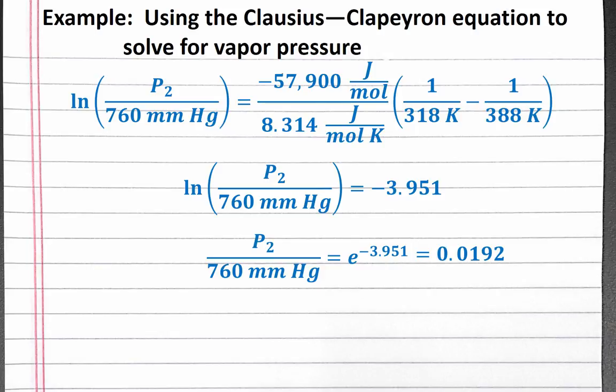Finally, we can multiply both sides by 760 millimeters of mercury to solve for vapor pressure 2. Our answer has the same units as vapor pressure 1. Completing the calculation, we get 14.6 millimeters of mercury.